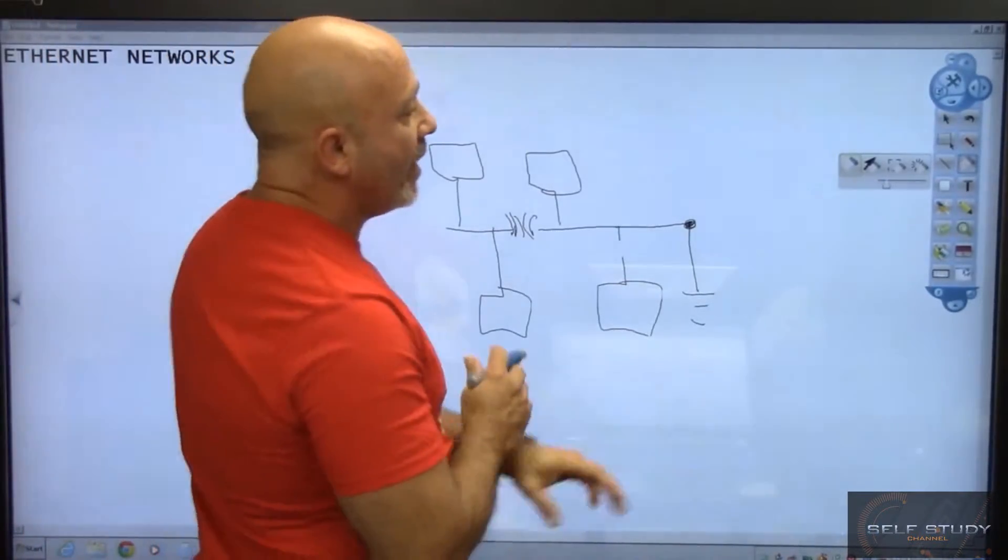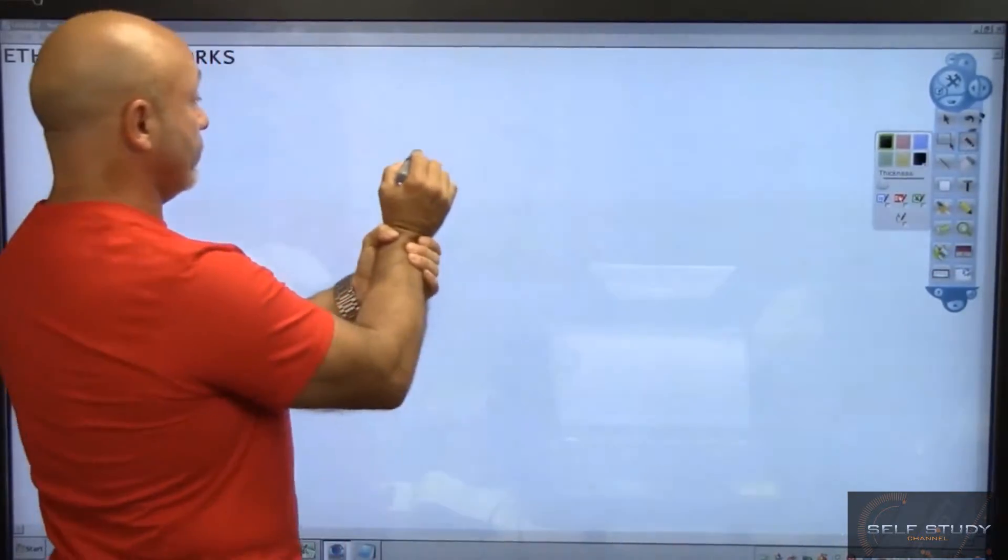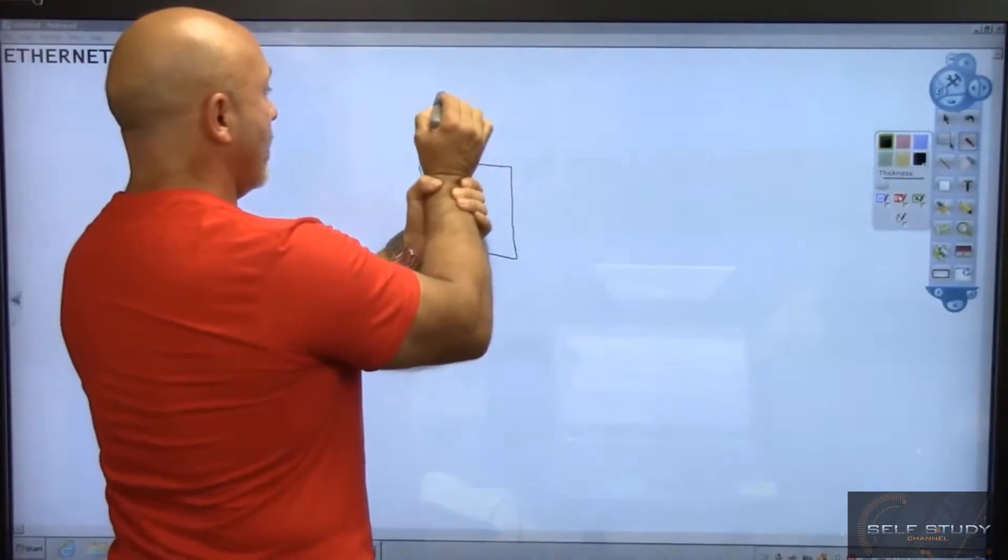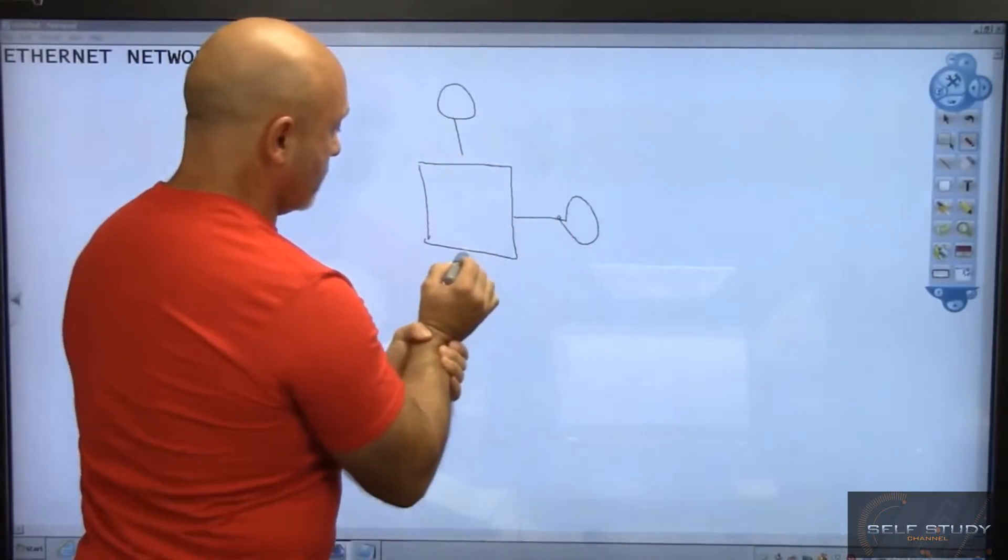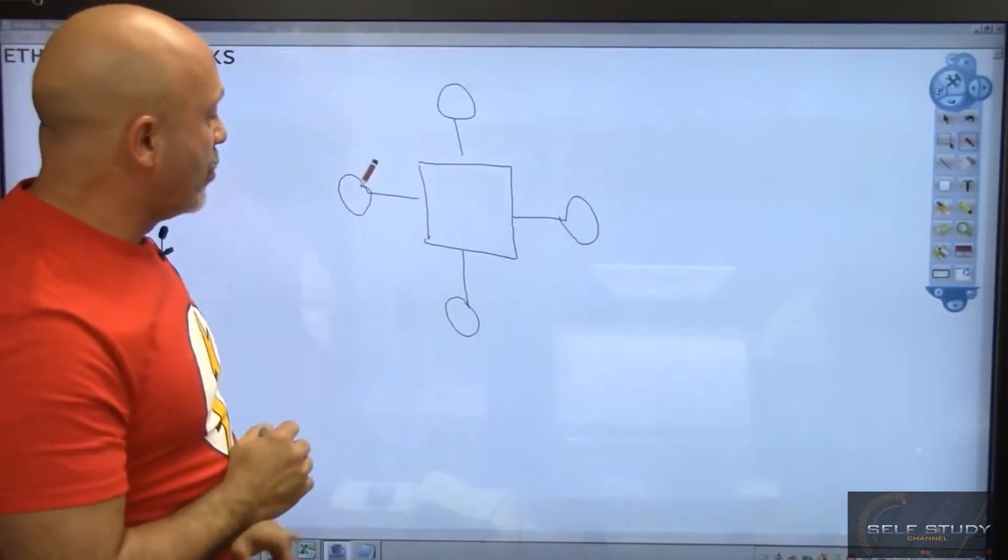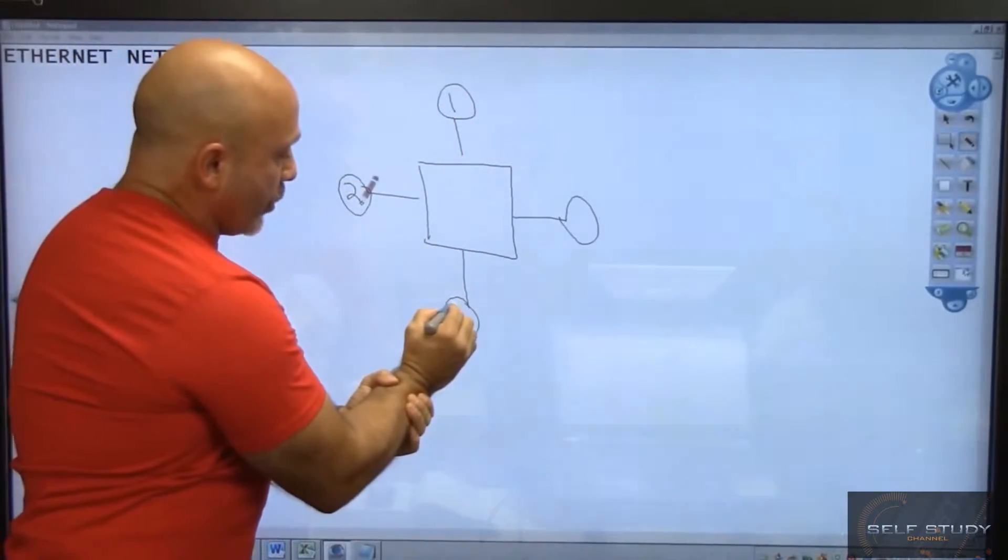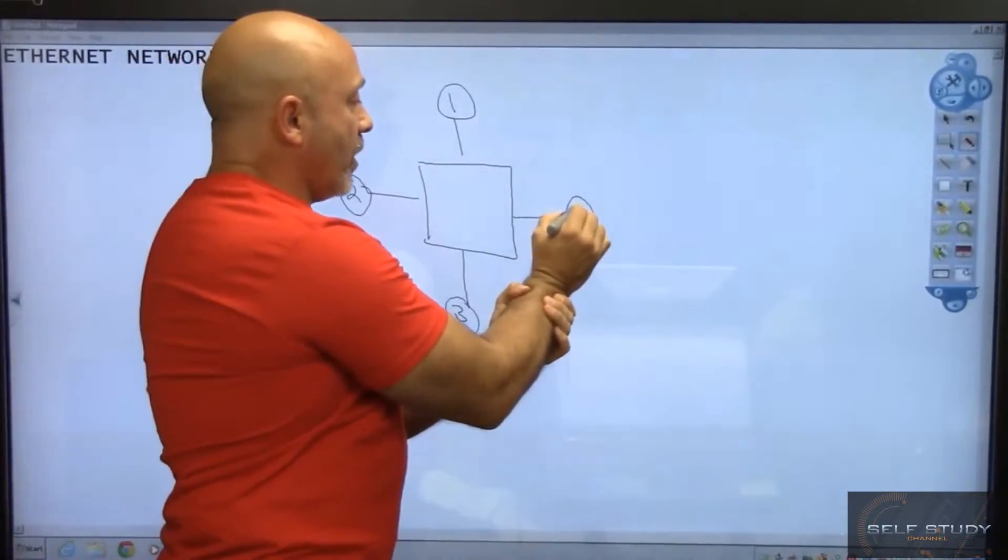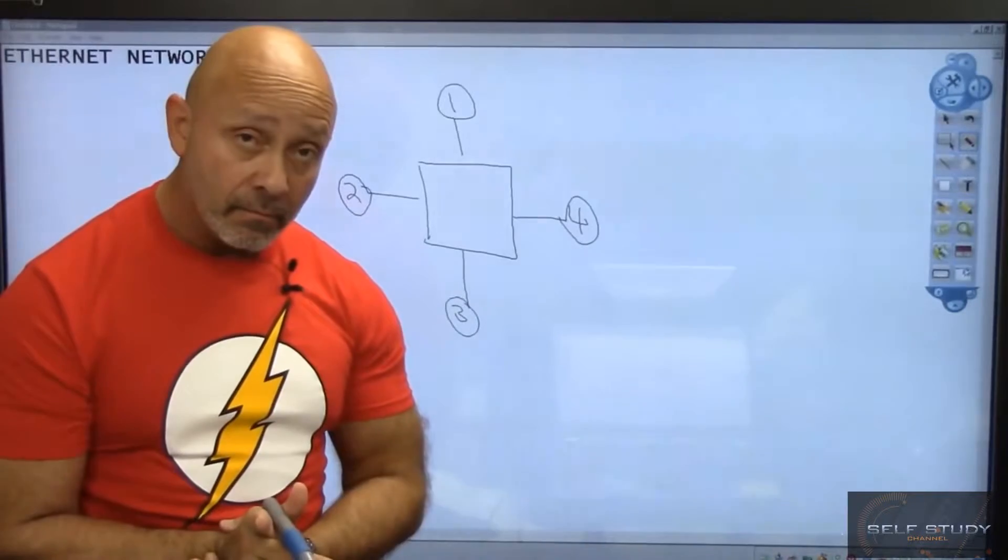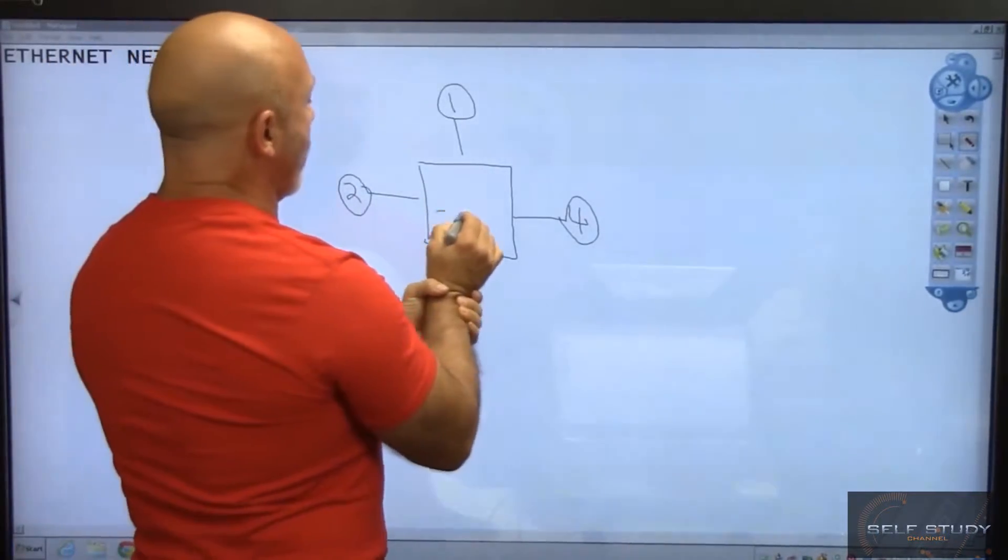We decided that we wanted to go ahead and create a more centralized system, and that's why we created the star. We had a centralized system where all computers, computer one, computer two, computer three, computer four, again Ethernet. Anybody can talk to anybody depending on the central device.